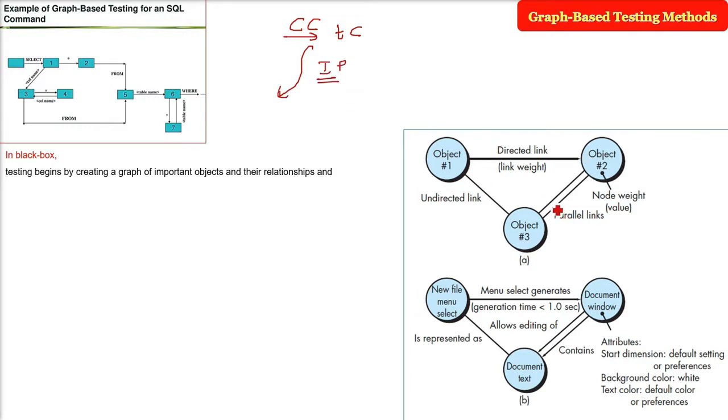Similar testing in black box also. In the white box also we created this graph. Here also we can create graph. But here we will have objects and we will try to show the relationship. So the test that will cover the graph so that each object and relationship is exercised at least once and the errors are uncovered.